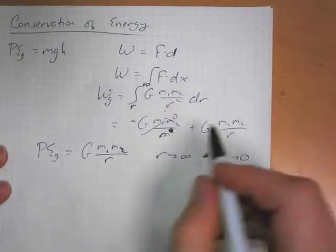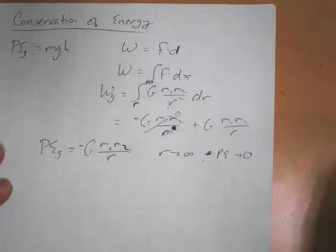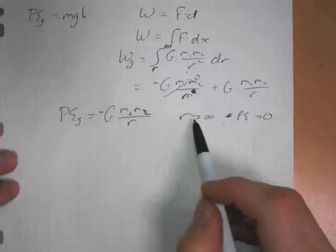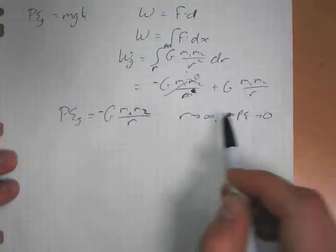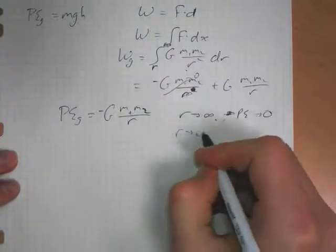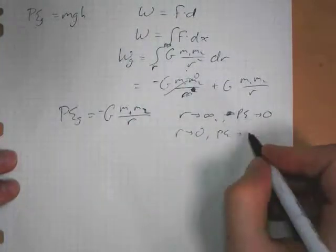So our gravitational potential energy is minus GM1M2 over R. As radius goes to infinity, potential energy goes to zero. As radius goes to zero, our potential energy goes to minus infinity.